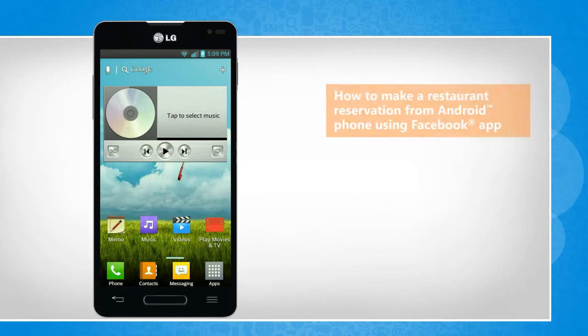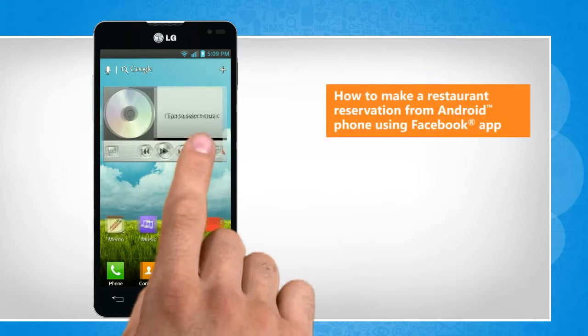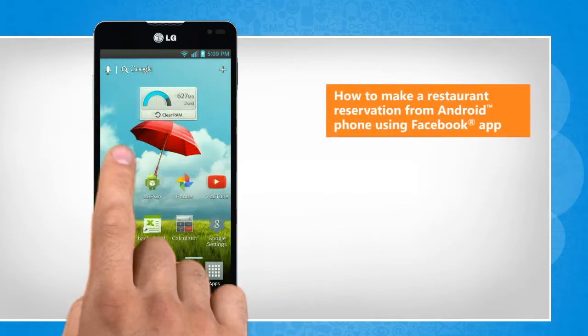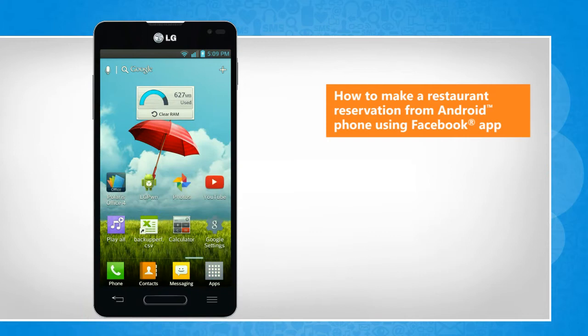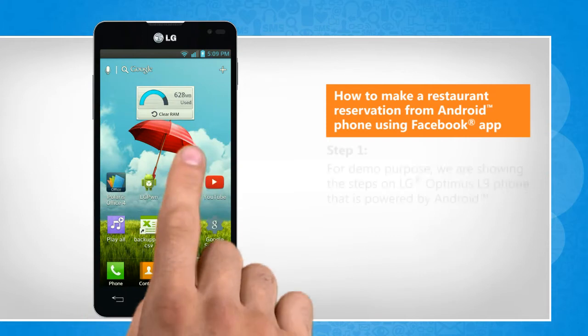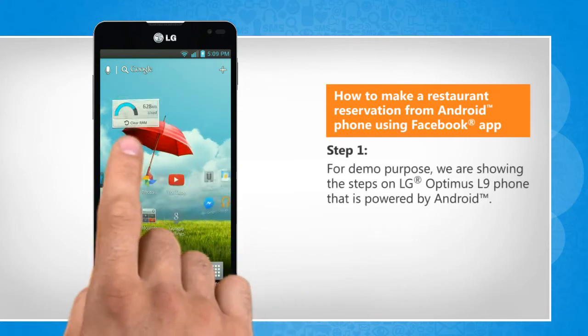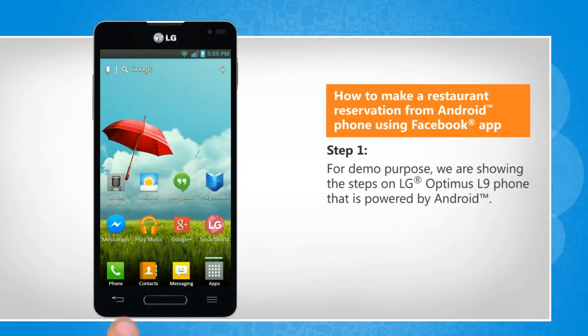Hi friends! Some restaurants allow you to make table reservations through the Facebook app on your Android phone. Let's go ahead and see how you can do so. For demo purpose, we are showing the steps on LG Optimus L9 phone that is powered by Android.